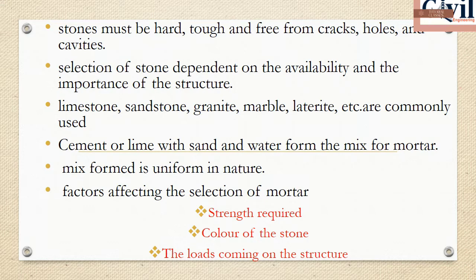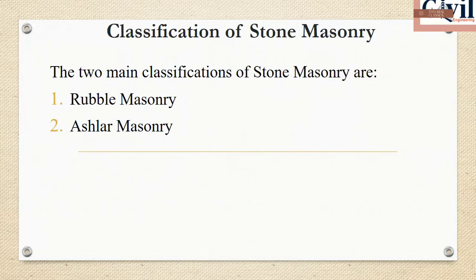The factors affecting the selection of mortar include the strength of the structure, color, the load coming on the structure, and the type of mortar. Stone masonry is classified into two main types.